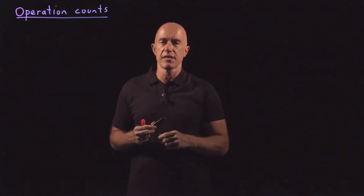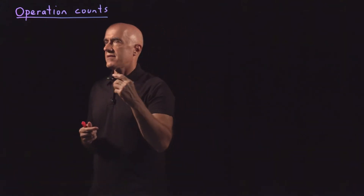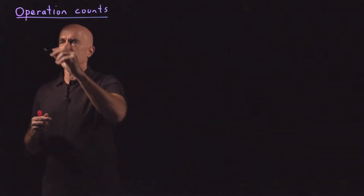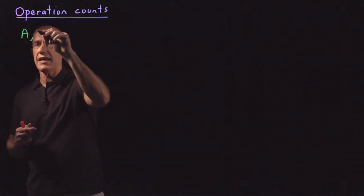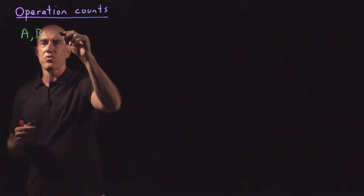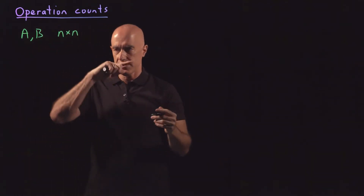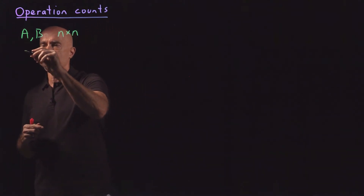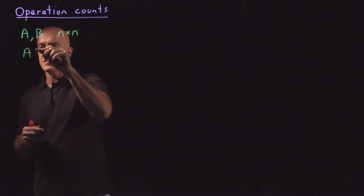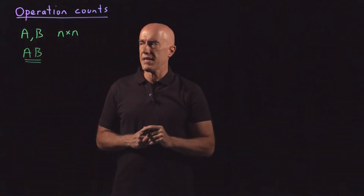Let me give you a simpler example than Gaussian elimination. Let's look at matrix multiplication. We're going to have two matrices, A and B — let's make them square matrices, so these are two n by n matrices. I want to count the number of operations for the product A times B.